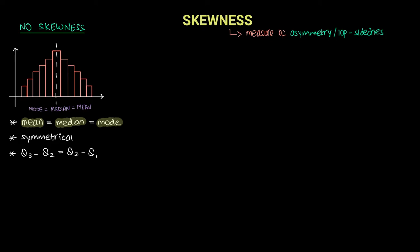Another way to identify that this distribution is symmetrical is through the quartiles. The separation between Q1, Q2, and Q3 will be the same — these gaps are going to be equal. This distance between Q1 and Q2 will be the same as the distance between Q2 and Q3. If the difference between the second and third quartile equals the difference between the second and first quartile, that is another property confirming your data distribution is symmetrical and has no skewness.